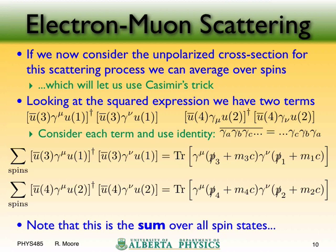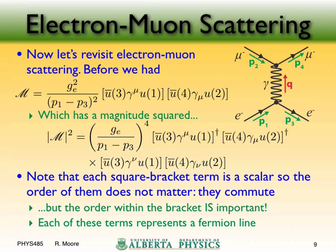We're dealing with the unpolarized scattering cross section, which is why we use Casimir's trick — summing over all spins. In our amplitude squared we have gamma-mu and gamma-nu because the repeated index from each bracket is independent. The complex conjugate has a different repeated index from the original since these are independent sums before multiplication. So we end up with mu indices on the top and nu indices, with different summations.